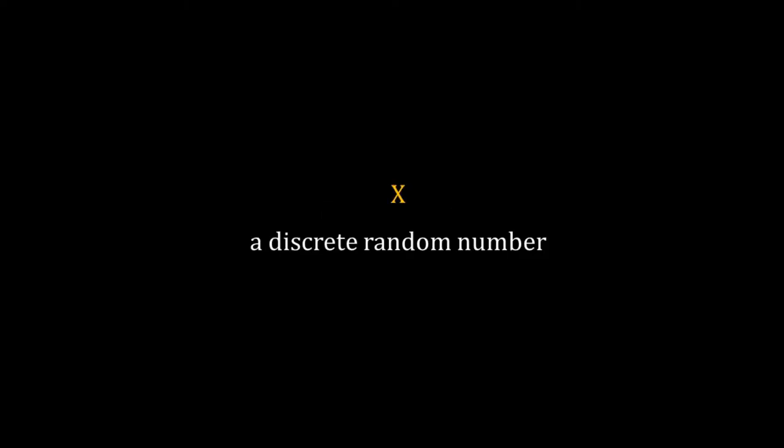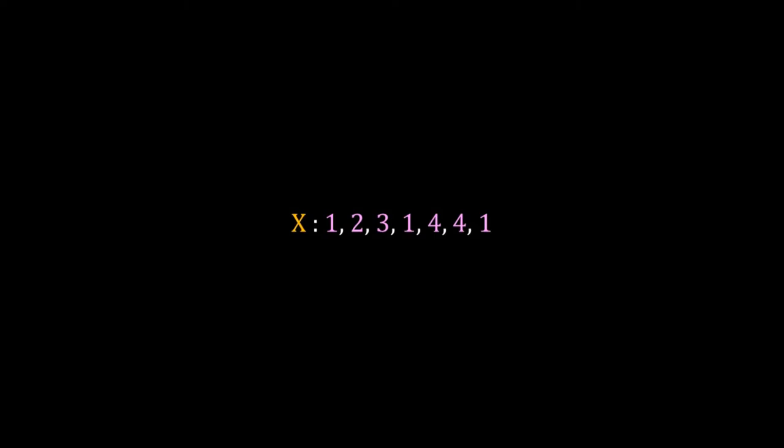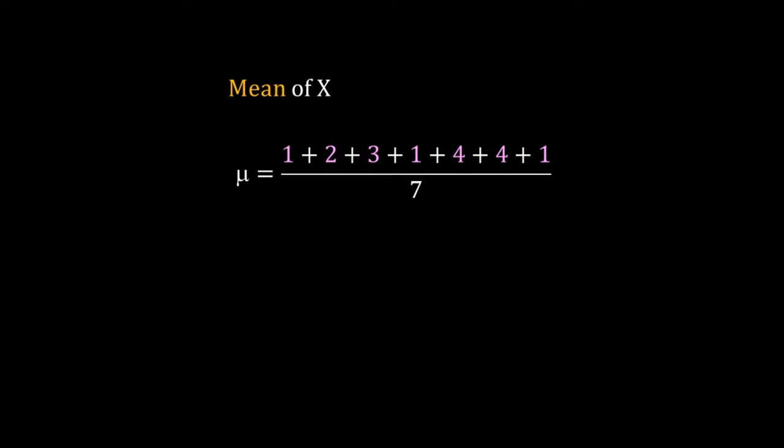Welcome back. Imagine we have a machine that generates a discrete random number x from 1 to 10. It has generated the seven numbers 1, 2, 3, 1, 4, 4, and 1. To get the mean, sum these numbers and divide by 7. Rearranging, we get 1 times 3/7 plus 2 times 1/7 plus 3 times 1/7 plus 4 times 2/7.